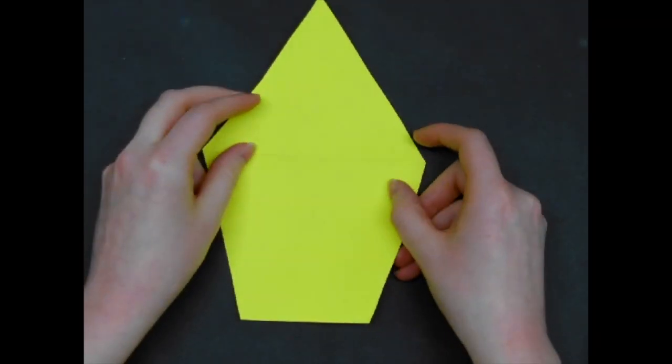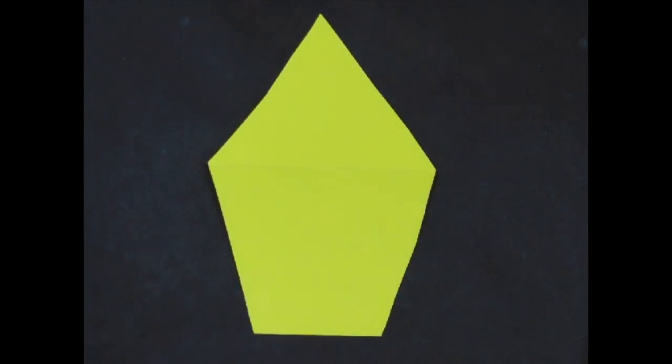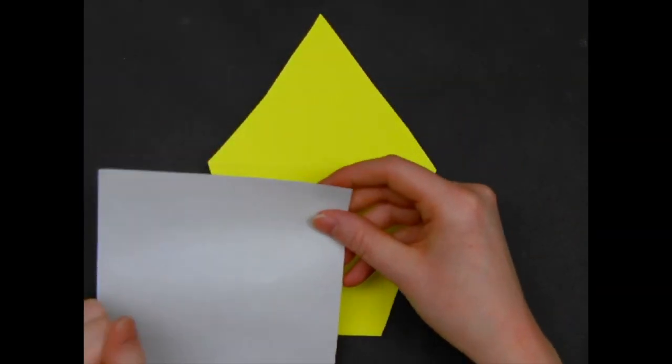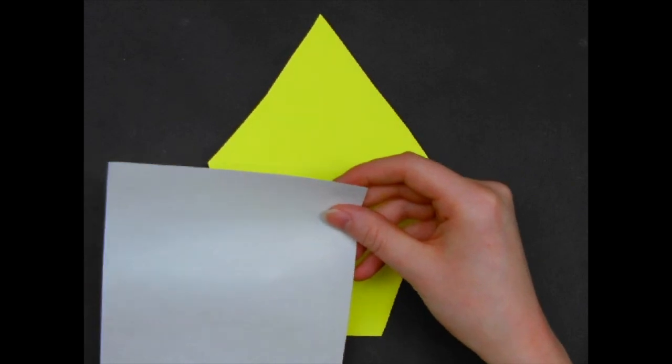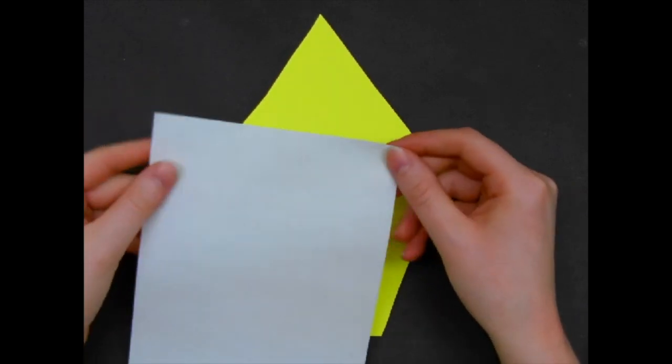Now we're going to flip it over so your name is on the back. And the first step we're going to do is get our icing. You're going to come up to my counter and you can either pick to have white icing or brown icing. You either have vanilla icing or chocolate.